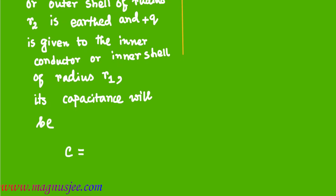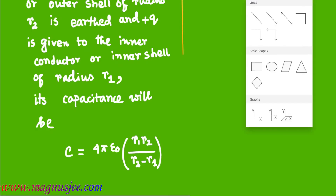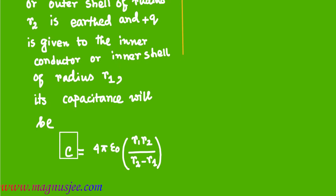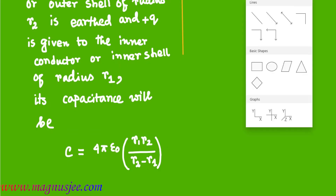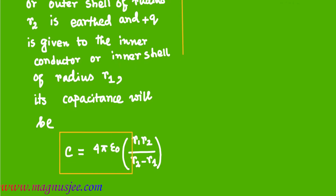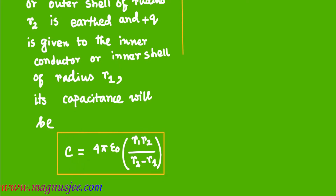C equal 4 pi epsilon naught, r1 r2 divided by r2 minus r1. That is the capacitance of a spherical capacitor whose outer shell is connected to earth: C = 4πε₀ · r1·r2 / (r2 − r1).